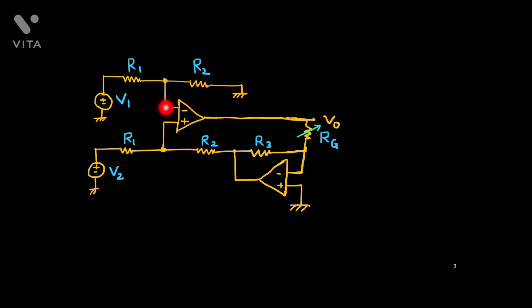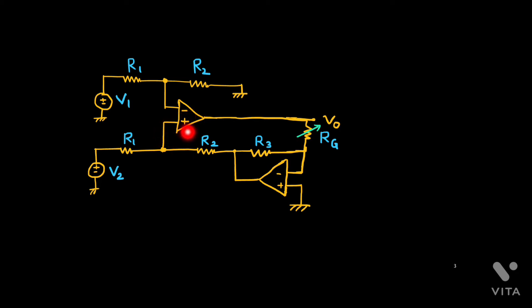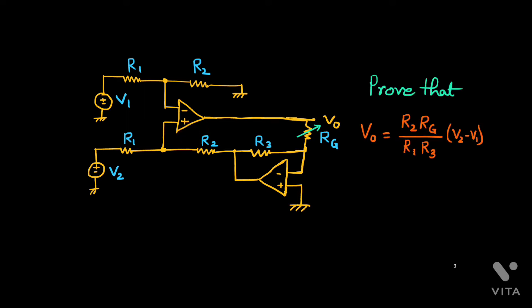Look at this figure carefully. From this negative inverting terminal, this resistance R2 is grounded, so there is no feedback here. Feedback is given in the path where this end is the positive non-inverting terminal. We want to prove that V0 is given by two times RG upon R1 times R3, and this is the gain multiplied by V2 minus V1 — that is a voltage difference. So this output is a difference amplifier, where gain is simply R2 times RG upon R1 times R3.